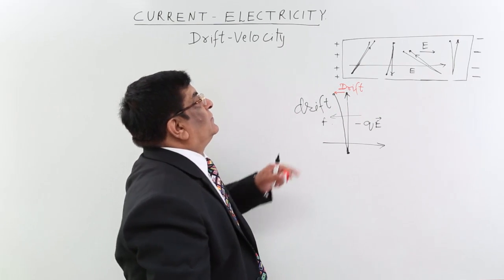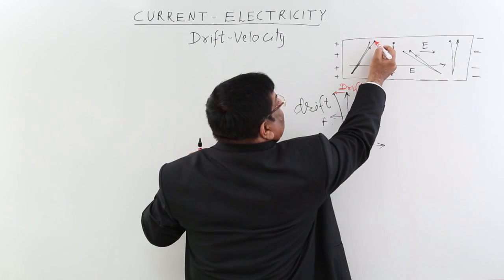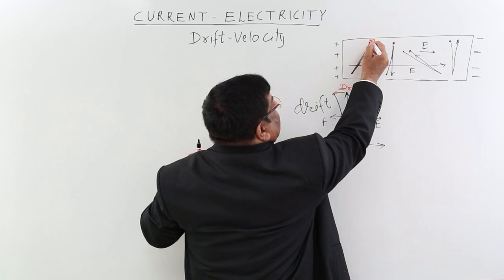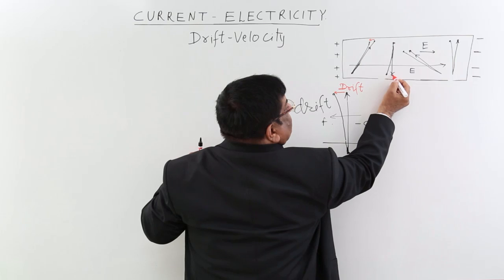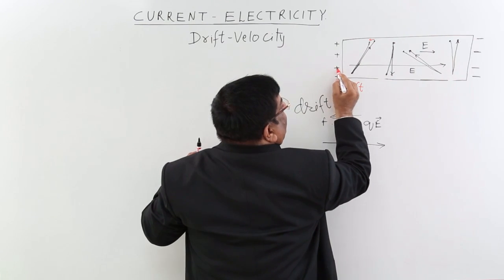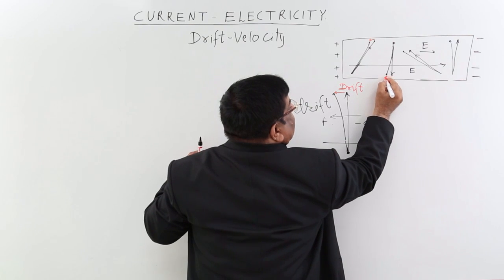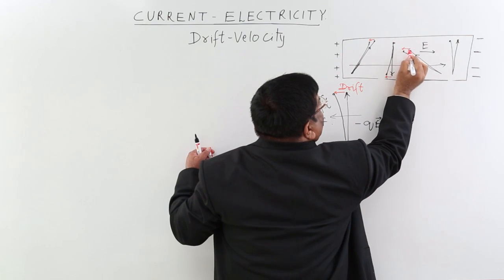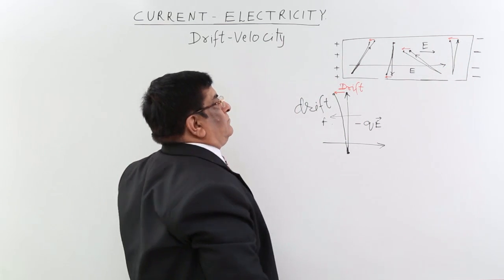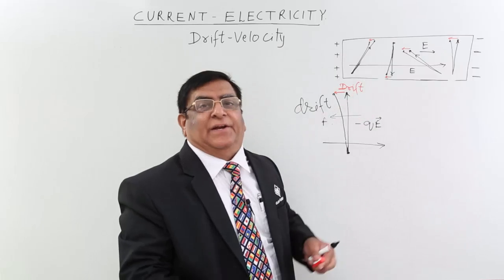Drift. Here it was supposed to go here, but because of the force it has gone here — that is the drift. This is the drift for multiple electrons. Accordingly, in millions of electrons, there is a drift. Now you have understood what is the meaning of drift and when it takes effect — when we apply electric field, not before that.